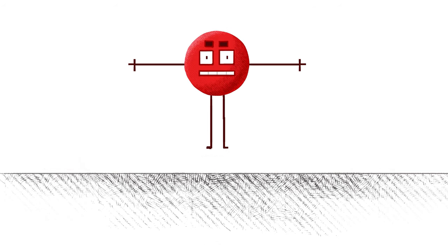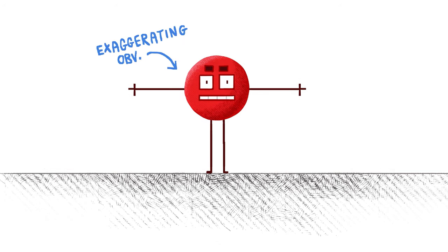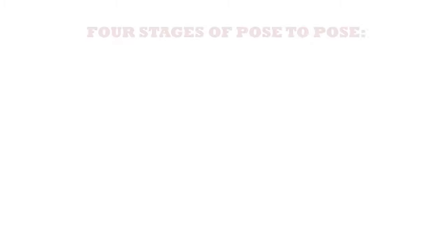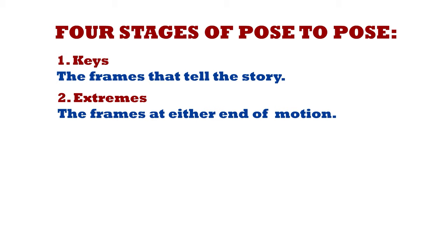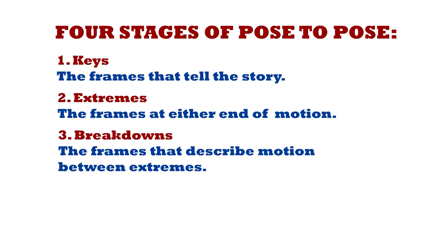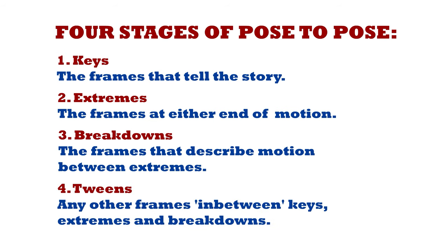The downside is movements can look less natural and stiff if you're not careful. With pose to pose, you should plan your shot in four stages. Number one, your keys or keyframes that tell the story of your animation. Number two, extremes, which exist at the furthest point of movement in any direction. Number three, your breakdowns, which describe the movement between extremes. And number four, your tweens, which go in between all the other frames to give the shot the correct timing.